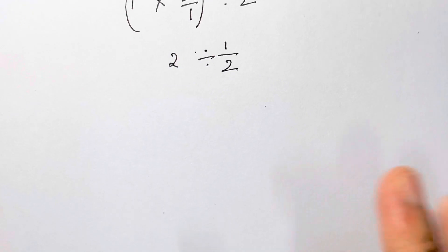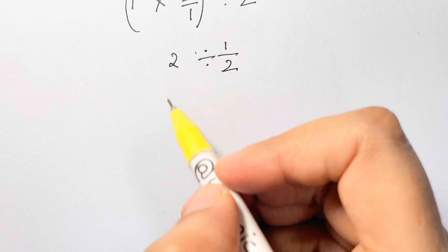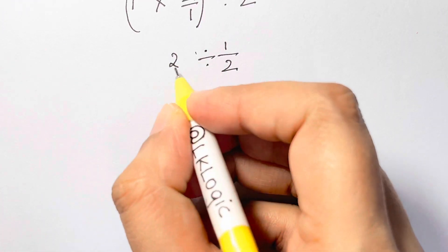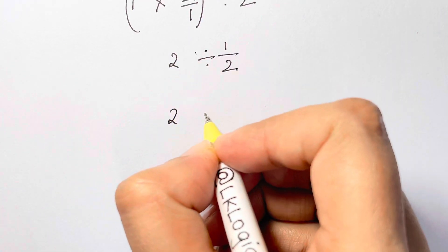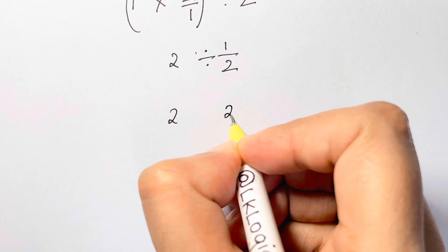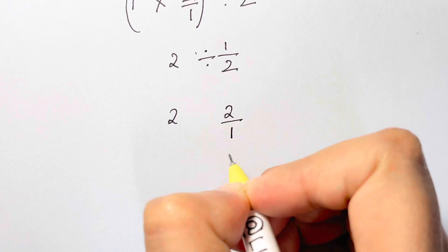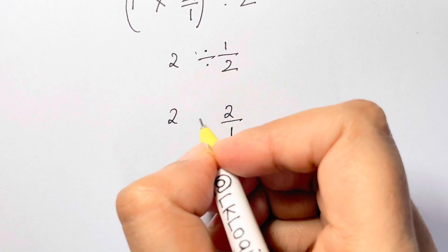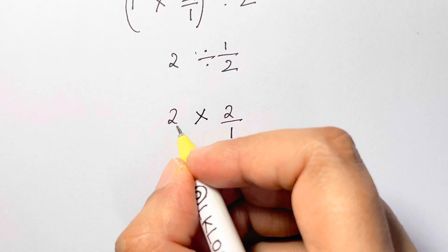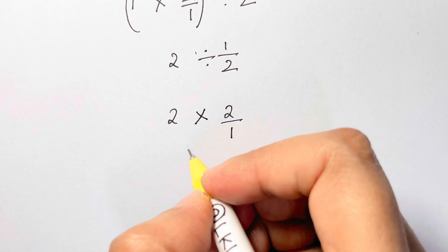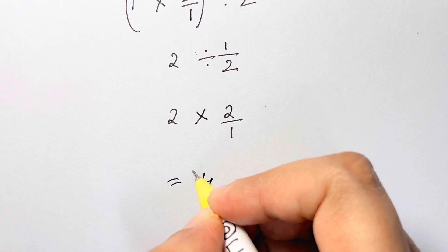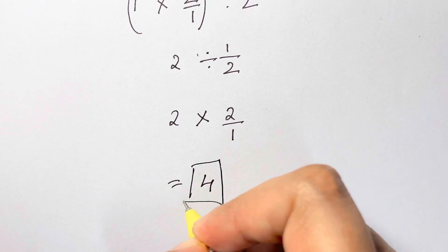Now you have 2 over 1 divided by 1 over 2 to solve. Keep the first fraction — 2 over 1 is 2. Flip the second fraction to 2 over 1, and change the sign from division to multiplication. You have 2 times 2, which equals 4, and that's your answer.